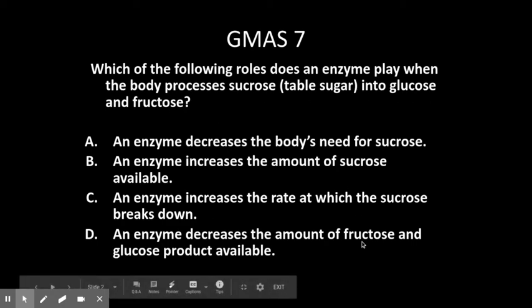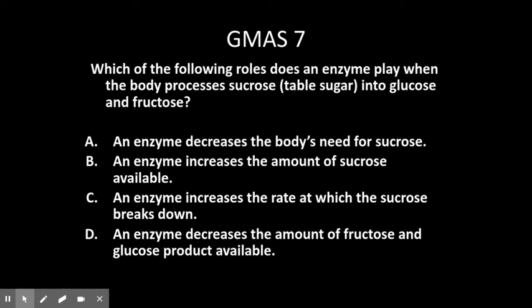Is it A, an enzyme decreases the body's need for sucrose? Is it B, an enzyme increases the amount of sucrose available? Is it C, the enzyme increases the rate at which the sucrose breaks down? Or is it D, an enzyme decreases the amount of fructose and glucose product available? Your answer for this question will be C — an enzyme increases the rate at which the sucrose breaks down.